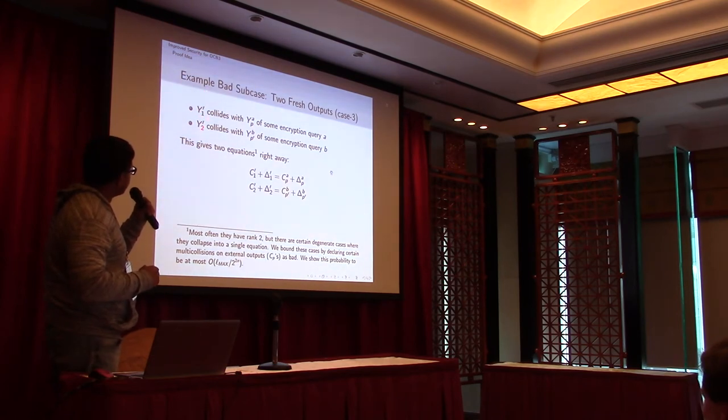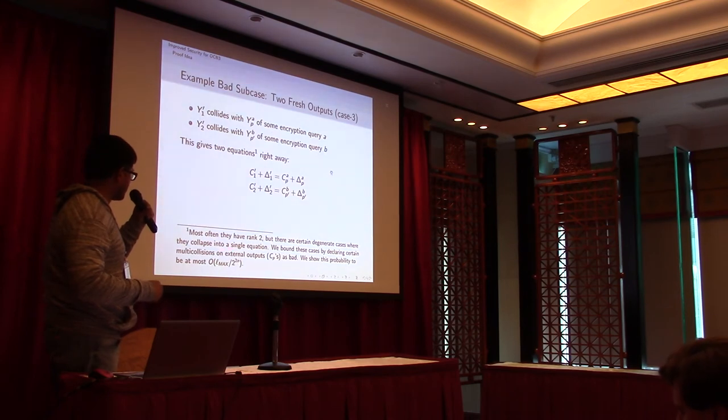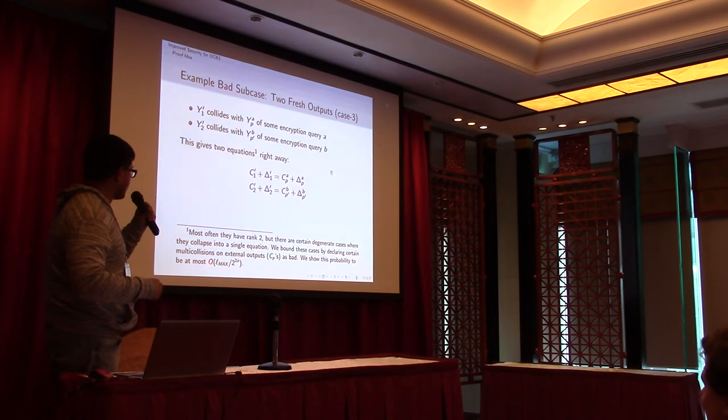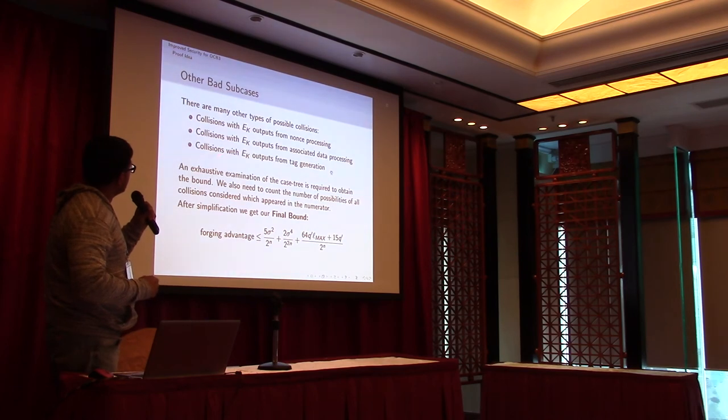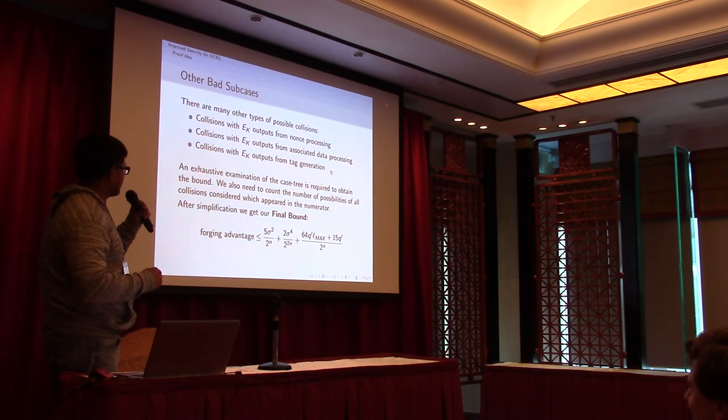And in the second bad subcase, we have two equations straight away, and most often they are rank two. But there are certain degenerate cases where they collapse into single equations, and those cases can be bounded by certain multi-collision on the external inputs or on the external outputs. And they can be shown to happen at most... There can be some other bad subcases as well when associated data processing collides with the output from tag generation. But if you analyze all those cases exhaustively, finally you will get this bound.